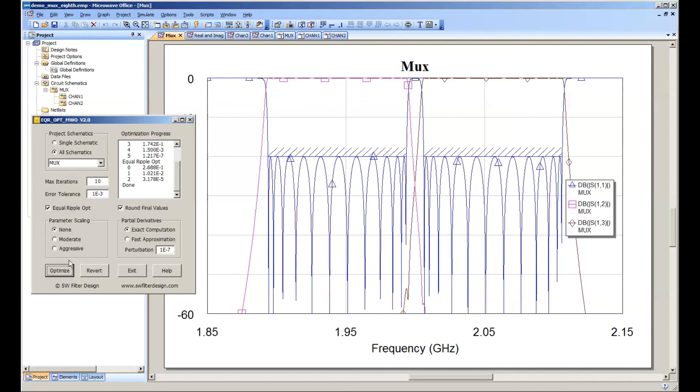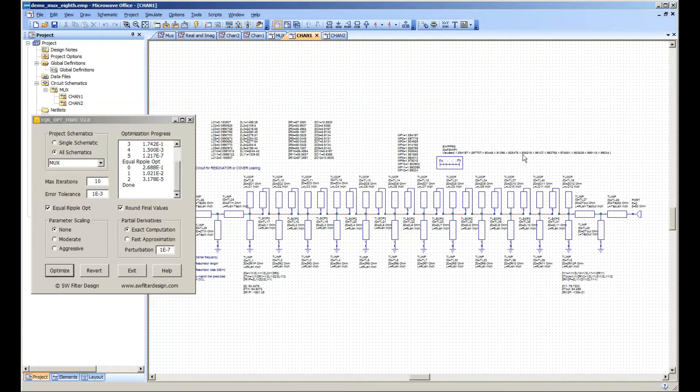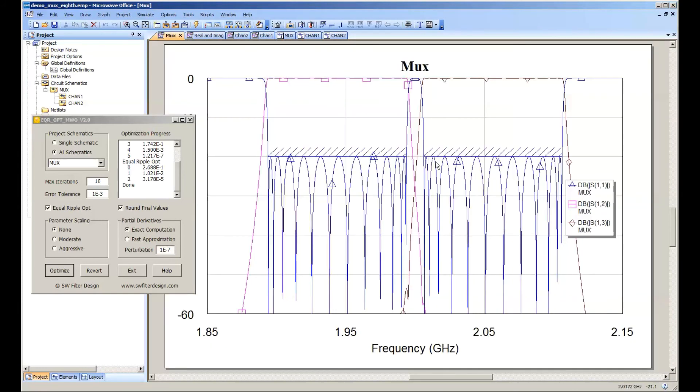Now, what if we want to make this contiguous? Well, at this point, the way we do it is we'll take this problem as a starting point and simply walk the two channels in toward each other. And we do that by setting the band edge frequencies here in each schematic. And we can move those in this case, probably megahertz at a time and just walk these two channels in closer together.